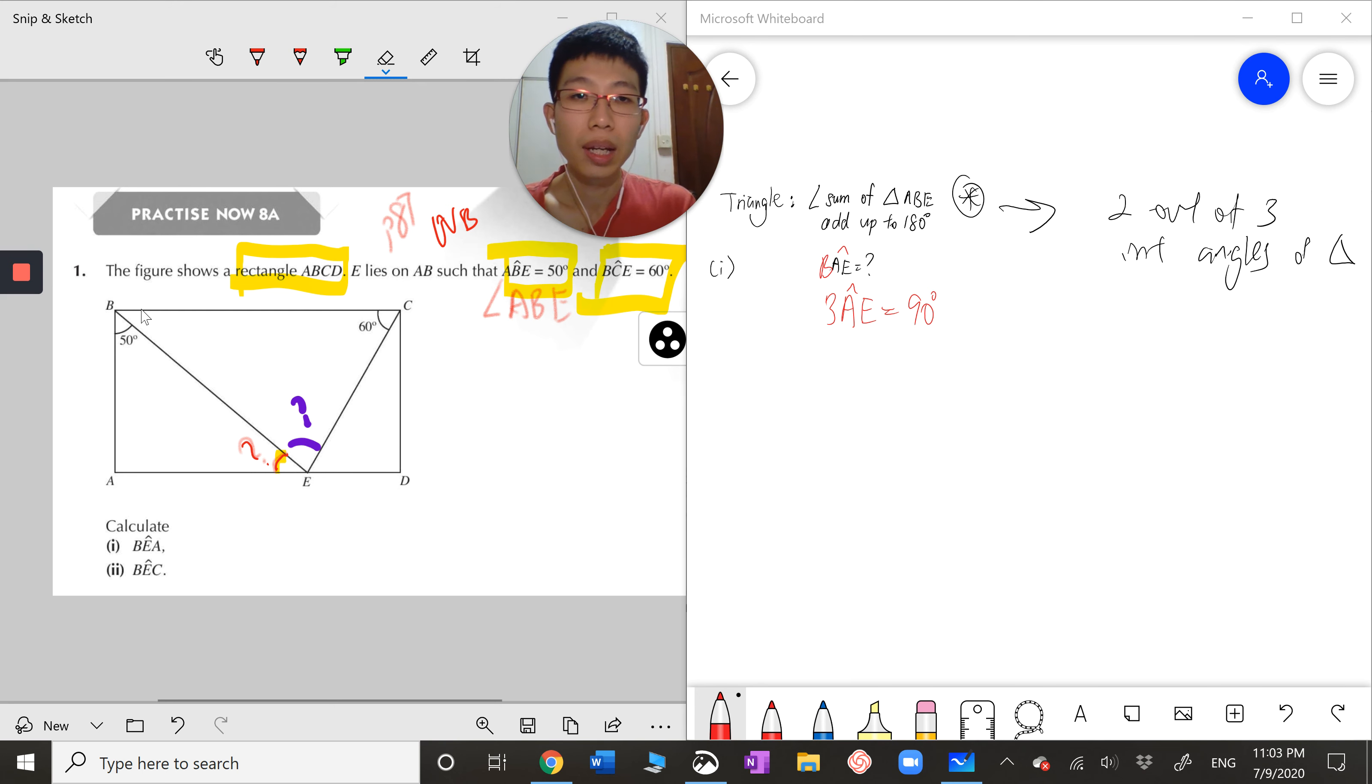Whenever I see a triangle, the first thing that comes to my mind is to use the sum of interior angle of a triangle that adds up to 180 degrees. This is the first property I need to think about whenever I meet any triangles in the diagram. To use this property, I need to make sure I have 2 out of the 3 interior angles. So now the question is, how do I find angle BAE? I realize that angle BAE is actually the interior angle of a rectangle, and I know that interior angle of a rectangle is equal to 90 degrees.